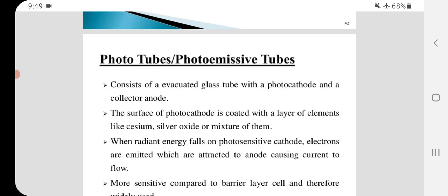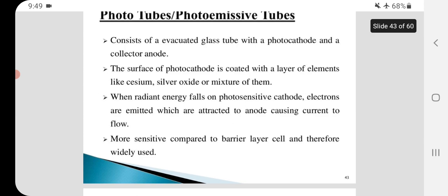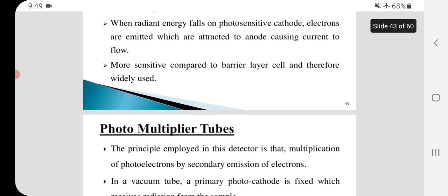The surface of photocathode is coated with a layer of elements like cesium, silver oxide or mixture of them. More sensitive compared to barrier layer cell and therefore widely used.